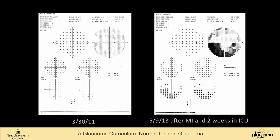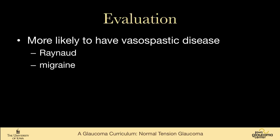This is a patient of mine whose visual field on the left is from March 2011, and then two years later another visual field — but in the interval he had a severe myocardial infarction and spent two weeks in the intensive care unit. The thought is that probably contributed to this rather profound loss of peripheral vision in a very short period of time. They're also more likely to have a history of spastic diseases like Raynaud phenomenon or migraine headache, contributing to the notion that normal tension glaucoma has more of a vascular character.